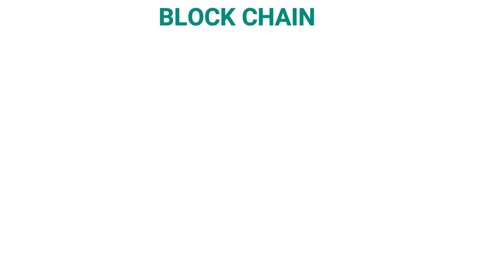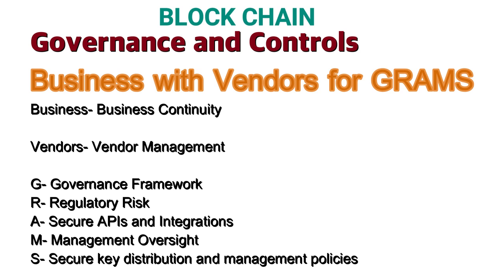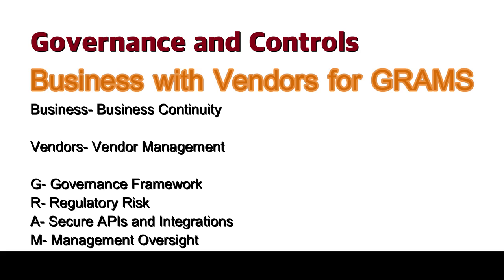The next topic is Governance and Controls for Blockchain, and the mnemonic for the same is 'BUSINESS WITH VENDORS FOR GRAMS'. Business stands for Business Continuity, Vendor for Vendor Management, G for Governance Framework, R for Regulatory Risk, A for Secure API and Integrations, M for Management Oversight, and S for Secured Key Distribution and Management Policies.